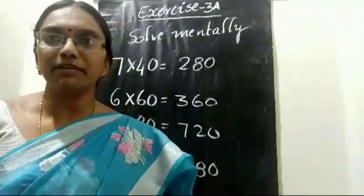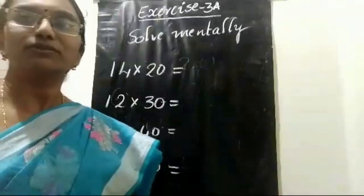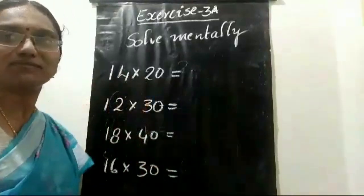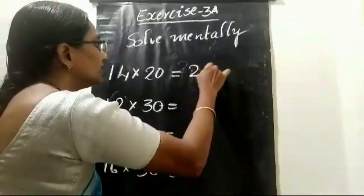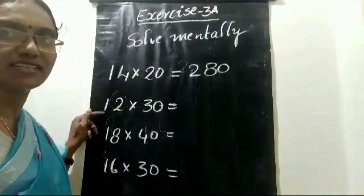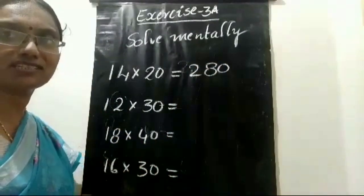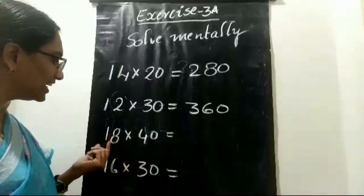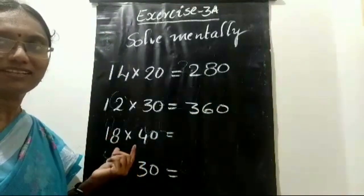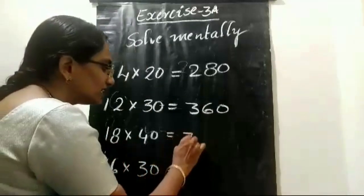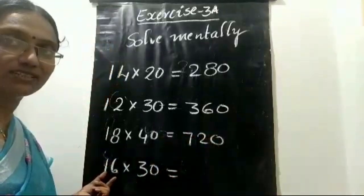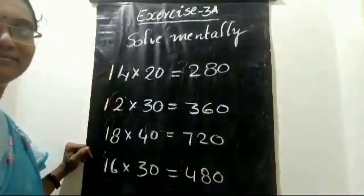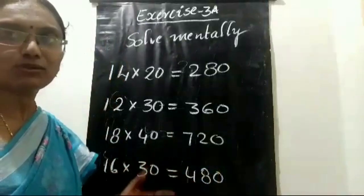We can do multiplications with speed using these strategies. Let us solve a few more examples mentally using mind calculations. 14 twos: 14 twos are 28, and one zero gives 280. Next: 12 into 30 — 12 threes are 36, and one zero gives 360. Now 18 into 40 — 18 fours are 72, and one zero gives 720. And 16 into 30 — 16 threes are 48, and one zero gives 480. In this way we can solve multiplications mentally.